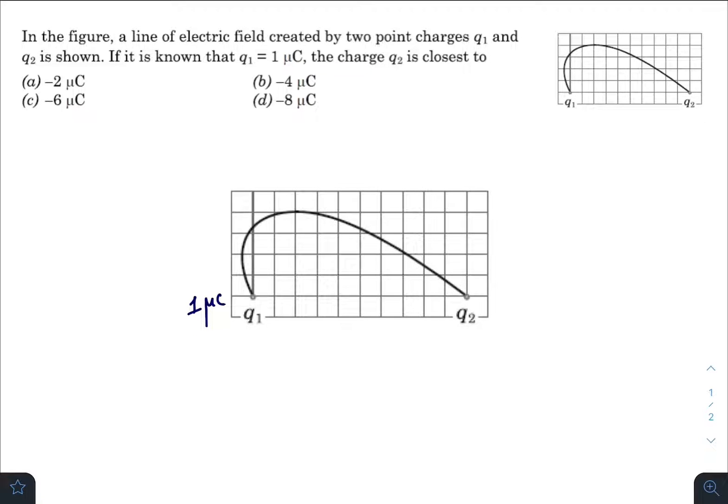As you can see, at this point the net vertical component of electric field due to both the charges will be zero. Let this be E1 and let this be E2. Let this be theta 1, let this be theta 2. So you can see that E1 sine theta 1 plus E2 sine theta 2 must be zero.